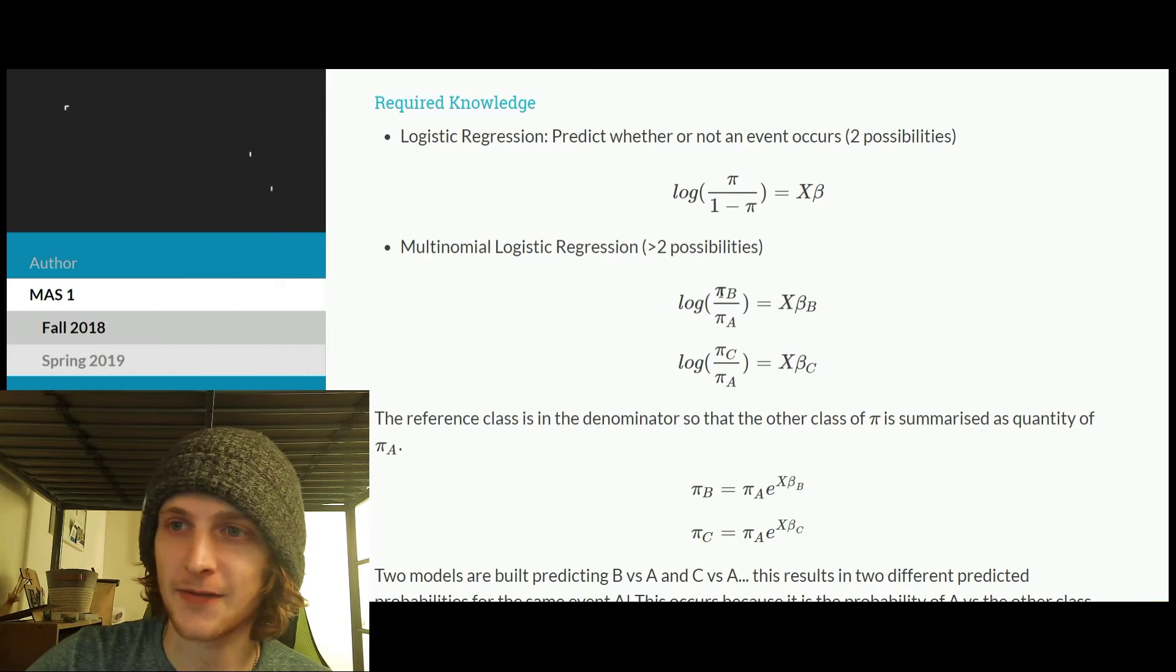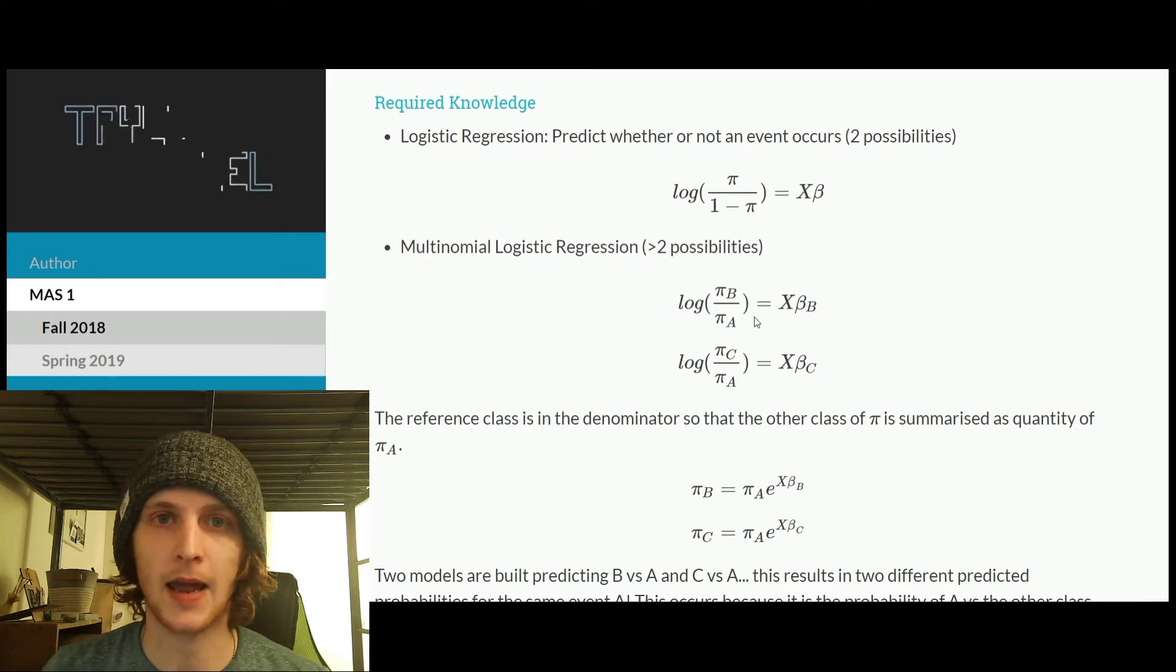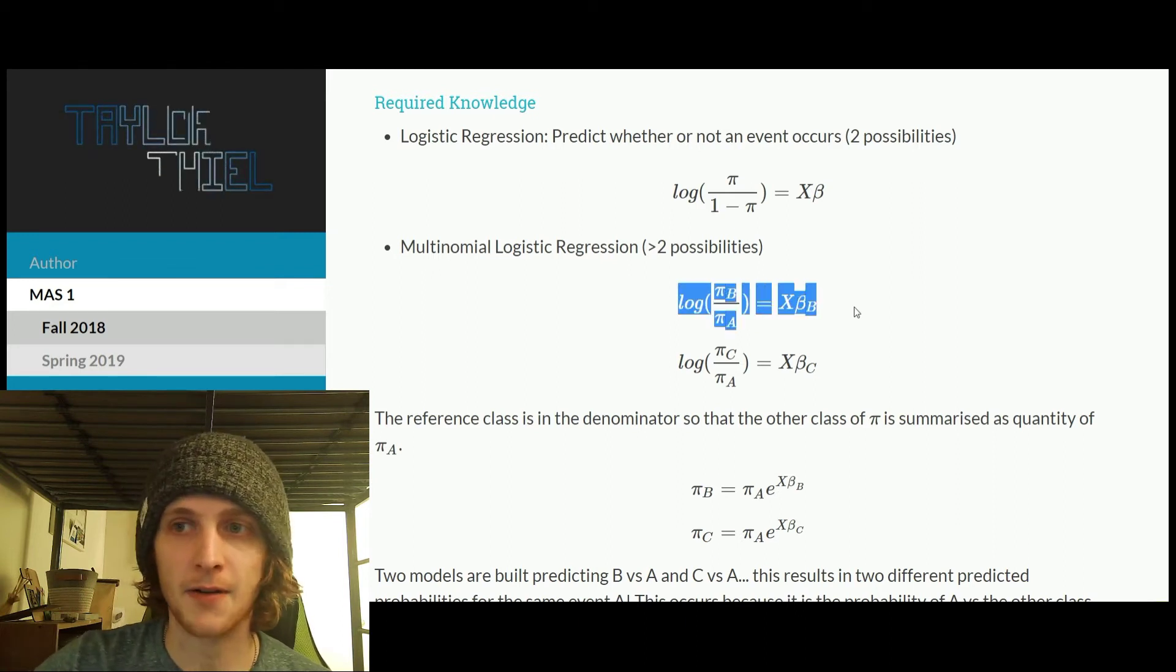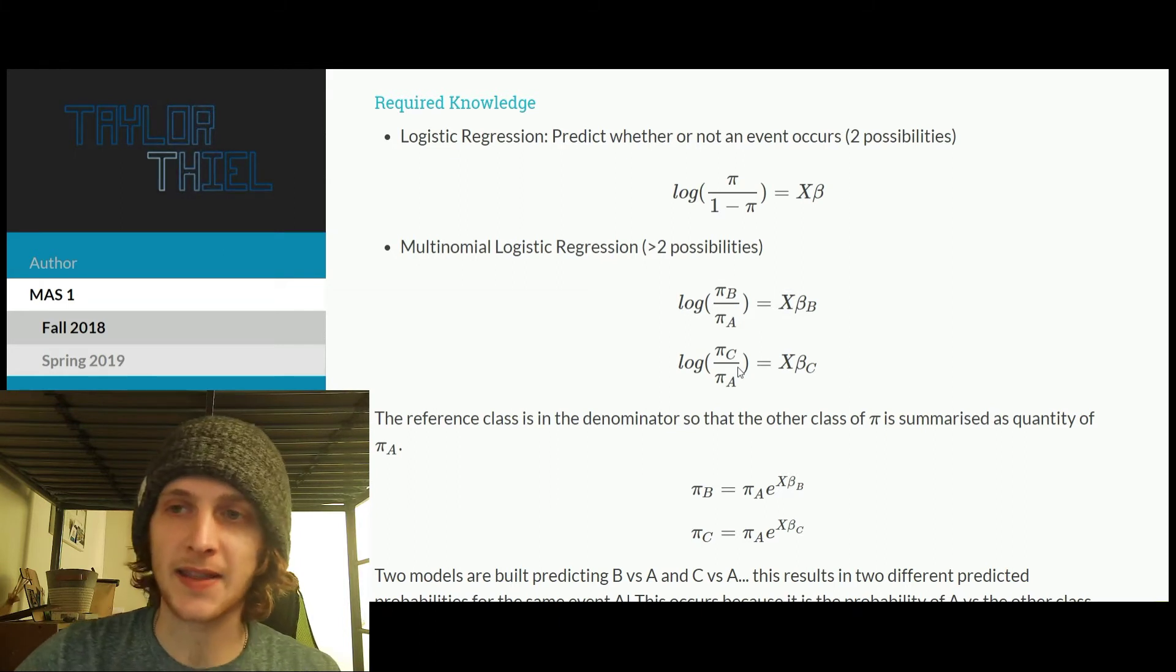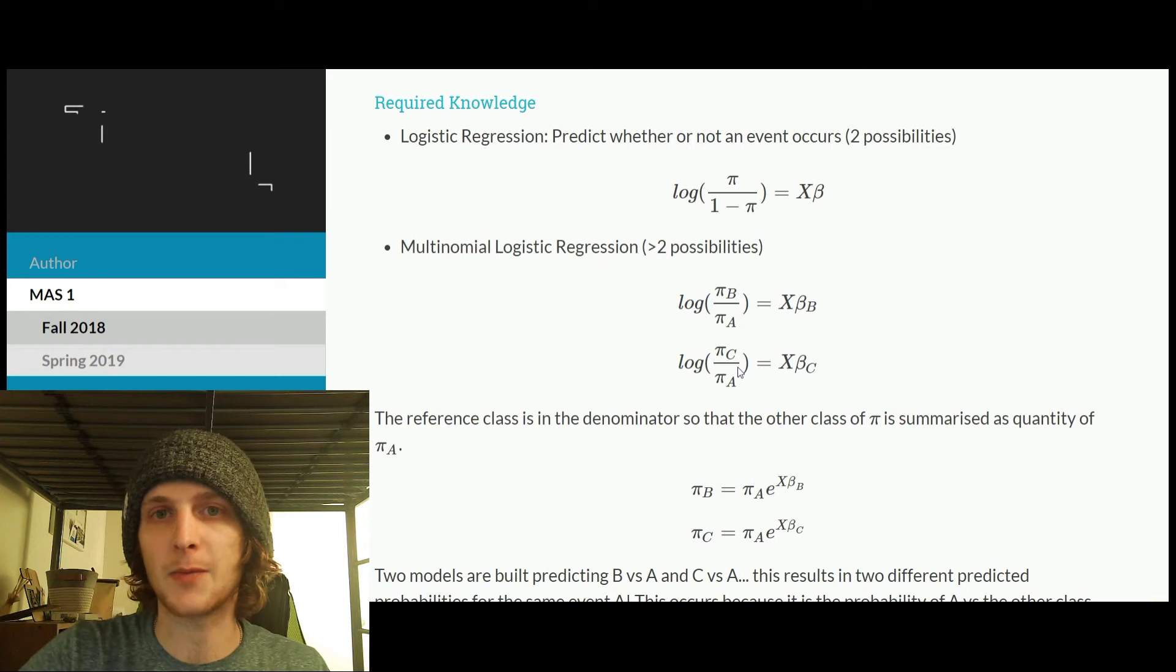So really, it's just a difference of labeling here, where when all we do is consider A events and B events, this is just a logistic regression. And then we repeat that process, but where we keep the A events, but instead of B, we look at C.